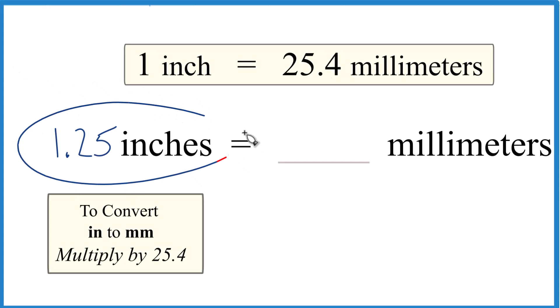Let's convert 1.25 inches to millimeters. Here's how you do it. We know that one inch is equal to 25.4 millimeters. This is something you look up or memorize.